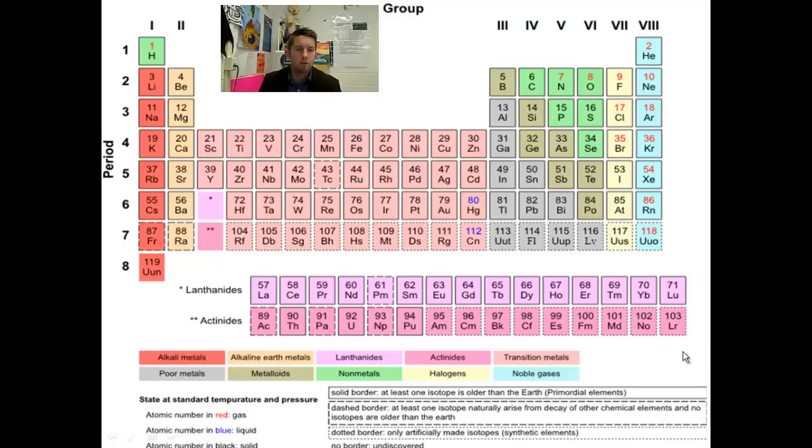For instance, if we look at the groups or the families, we have the groups and families going vertically on the periodic table. This is group number one, number two.